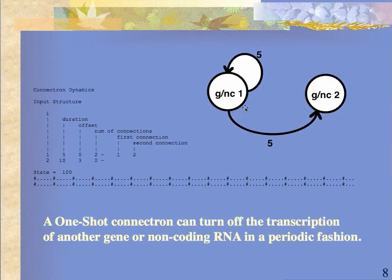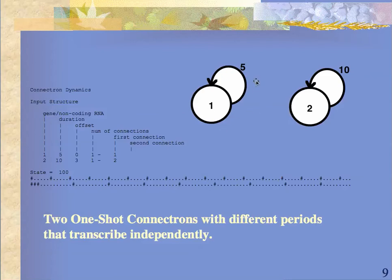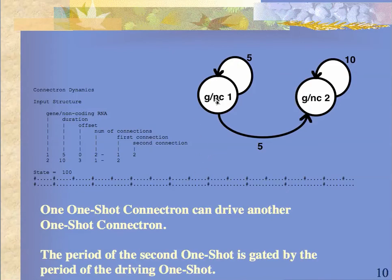If the first region sends an RNA to the second region, it's going to cause syncing, and so each one of them will have a periodicity of five. If you have two independent events with different time constants, they're only going to sync occasionally — the first one has a periodicity of five, and the second one has a periodicity of ten. If the first region sends a connectron to the second region, you're going to get syncing of the periodicity of ten on the second site.